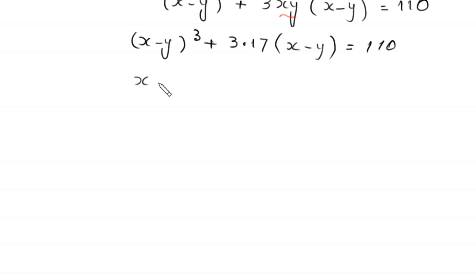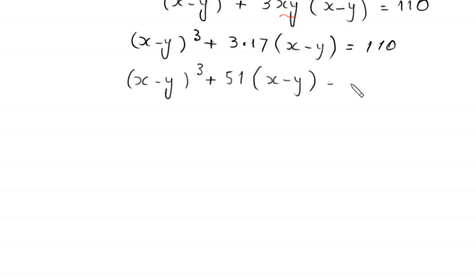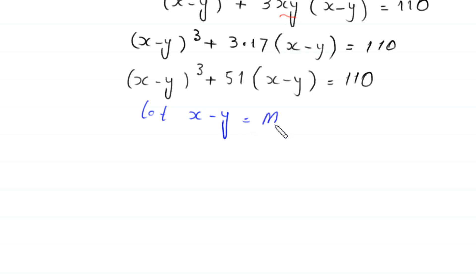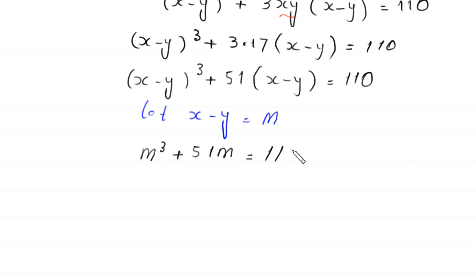This gives (x − y)³ + 51(x − y) = 110. We let m = x − y, so the equation becomes m³ + 51m = 110.